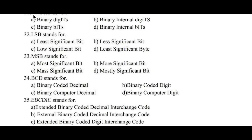Question number thirty-one: 'bit' stands for — option A, binary digits, is the right answer. Question number thirty-two: LSB stands for — option A, least significant bit, is the right answer. Question number thirty-three: MSB stands for — option A, most significant bit, is the right answer. Question number thirty-four: BCD stands for — option A, binary coded decimal, is the right answer.